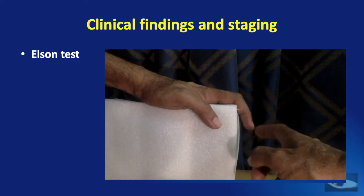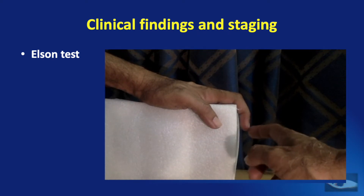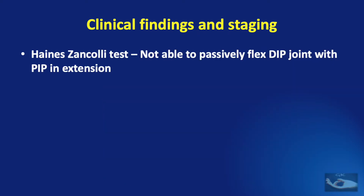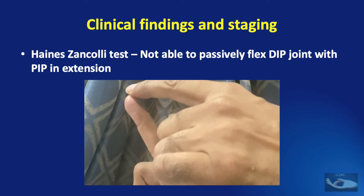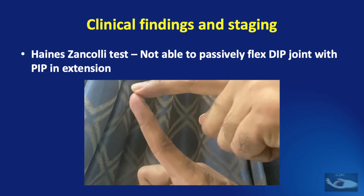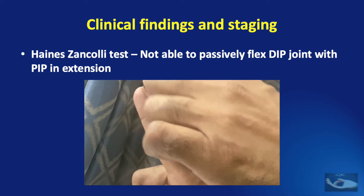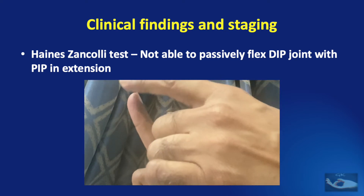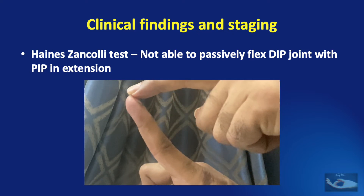The DIP joint should be free and flail if the central slip is intact. If the central slip has been injured or attenuated, the DIP joint will appear rigid when this test is done. The next test is the Haynes-Zancoli test, where the PIP joint is held in neutral position and the DIP joint is passively flexed by the examiner. If the DIP joint does not flex passively, it means either the joint capsule or the retinacular ligaments are tight.